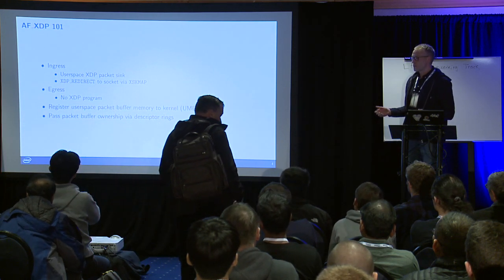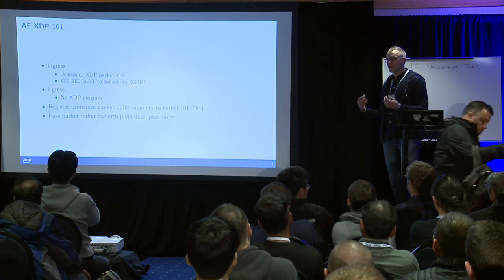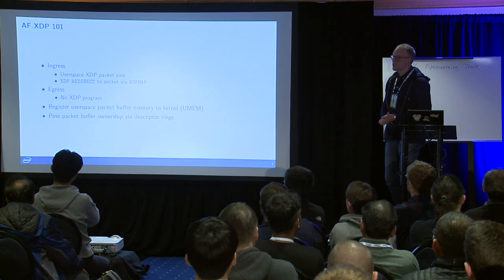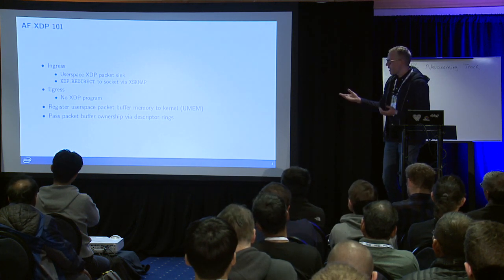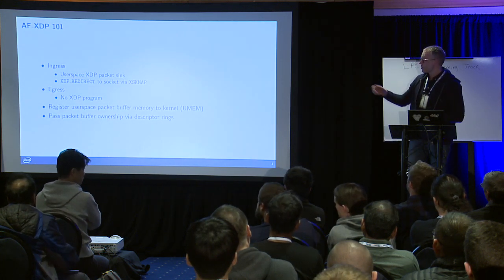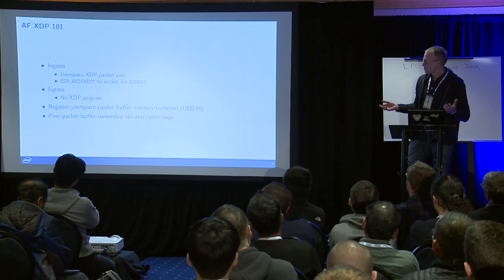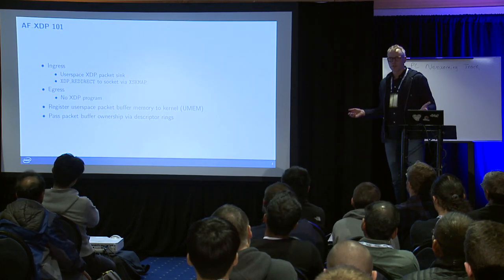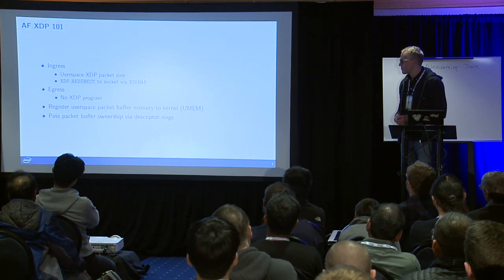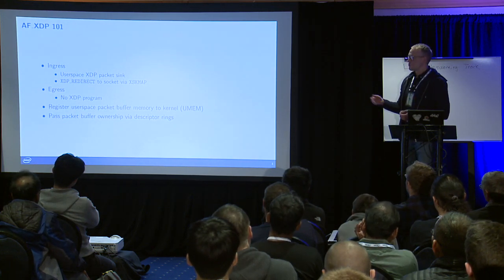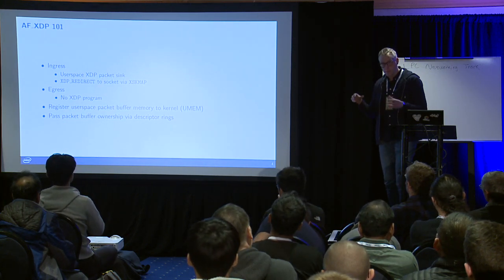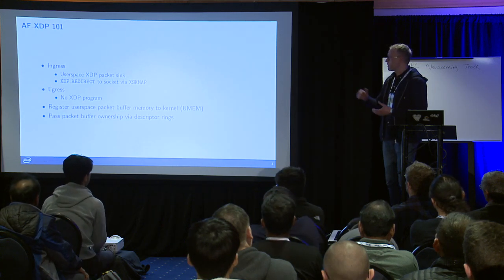Same thing with dev map: you receive a packet, hand it via the dev map, and it goes out via the device specified in the dev map. For AF-XDP, you use the XSocket map to redirect to the socket. The idea is that you place the AF-XDP socket into this map and then redirect out to it. On the egress side, there's no XDP program there, so it just gets sent out.